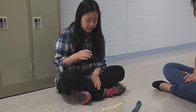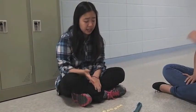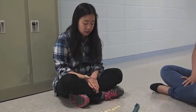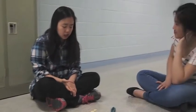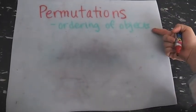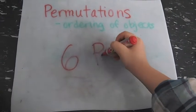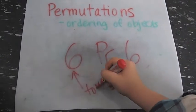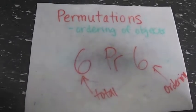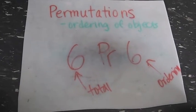So, out of six total letters, we're picking six to order. So that's 6PR6. Permutations are the ordering of objects. So 6PR6 means, out of six total objects, we are ordering six objects, or letters in this case.